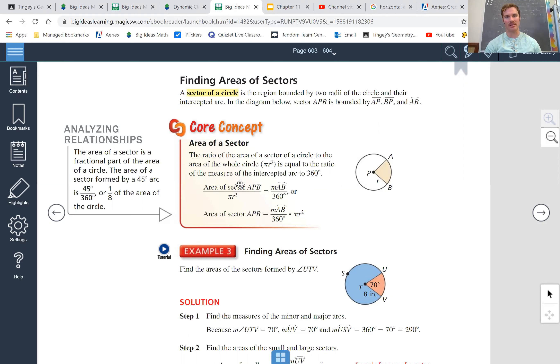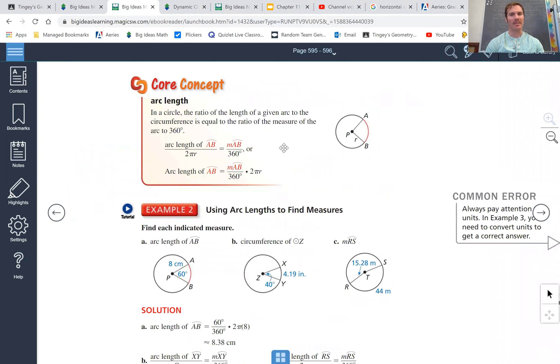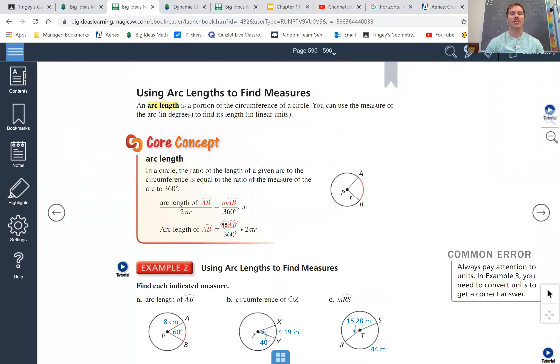You may recognize this. This looks very similar to a previous core concept, like in 11.1. I'm going to go over there really quick. This is arc length. This was the formula that we used to find the length of this arc. Very similar. What's the difference?